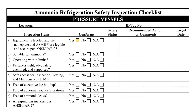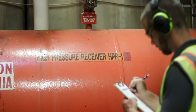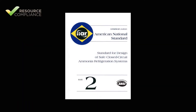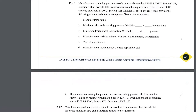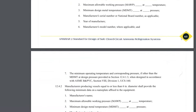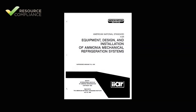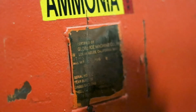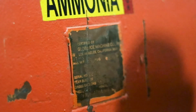Item A asks if the vessel is labeled and has a legible nameplate. A proper label consists of the component name and ID number. IIAR Standard 2 contains the requirements for pressure vessel nameplates. Since Standard 2 is a design standard, it is important to consult the edition of Standard 2 that was in effect when the vessel was built, as some requirements may have changed. For example, the 1984 version of Standard 2 did not require the nameplate to contain the minimum design metal temperature, or MDMT, but the 2021 version does. Since this high-pressure receiver was manufactured in 1984, it is not surprising that the nameplate lacks that information.